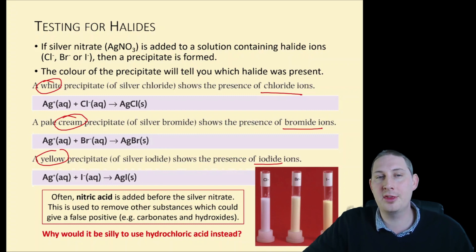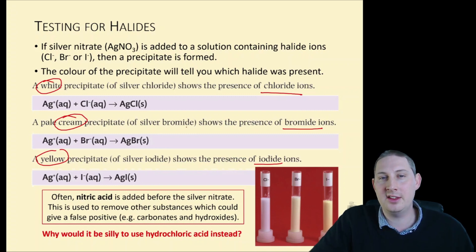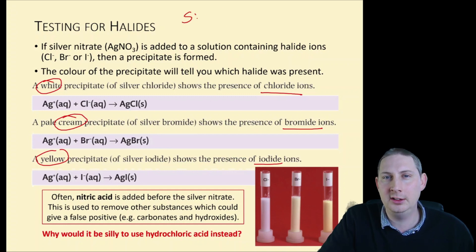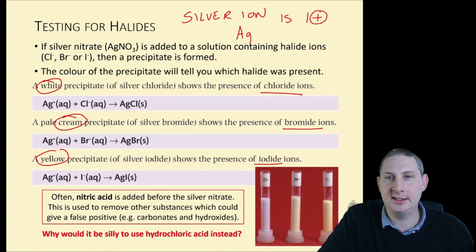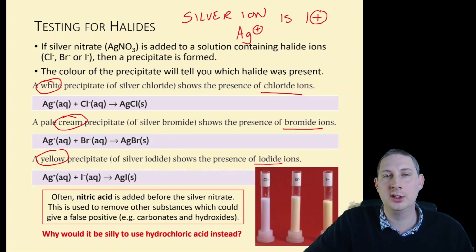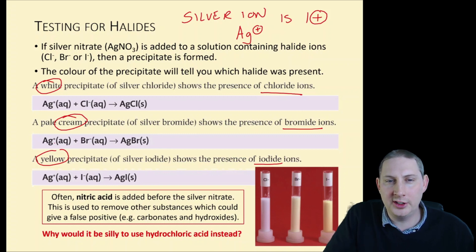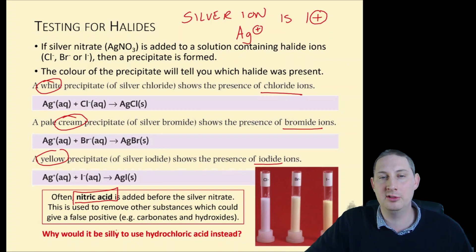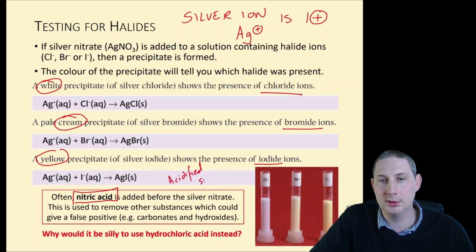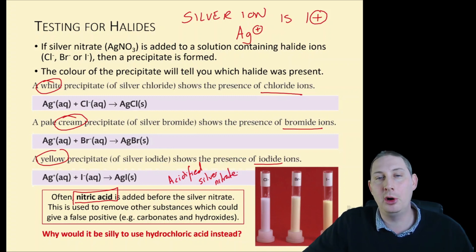The three ionic equations for their formation are straightforward. Note that the silver ion is Ag⁺, a 1+ ion — it's the exception to the rule, as most transition metals form a 2+ ion. Often nitric acid is added before the silver nitrate; this is used to remove impurities that could give a false positive, stopping hydroxides and carbonates from giving a positive result in the test.